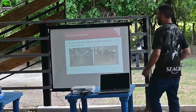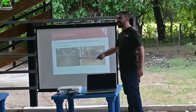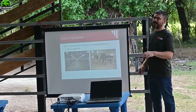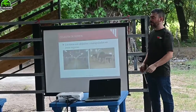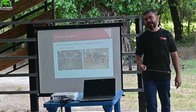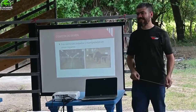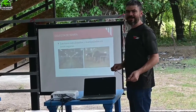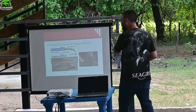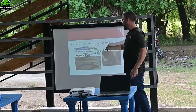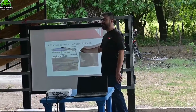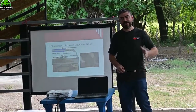Semen collection is done in specialized laboratories where only males are present. Collection can be done by electroejaculator — a device inserted in the bull's rectum — or by mount. For mount collection, another bull is used below, not a cow, because you could lose the collection if he mounts the cow. An artificial vagina is used: a solid tube with a rubber lining inside.